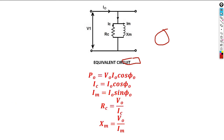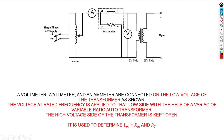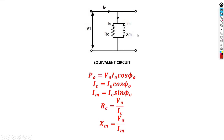Now let's look at how we calculate those losses. The equivalent circuit for the open circuit or no-load condition is represented by a specific circuit. This no-load test equivalent circuit helps us determine the core losses and copper losses of the transformer.